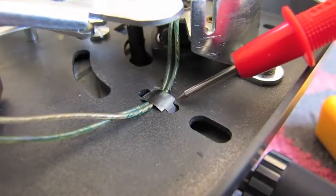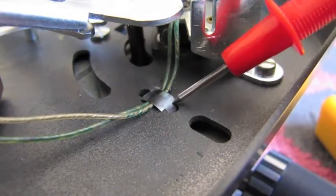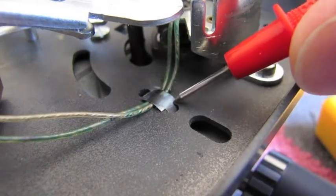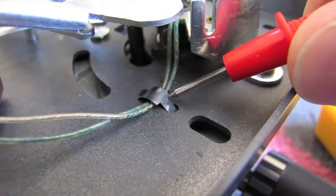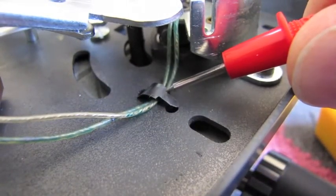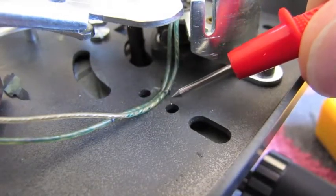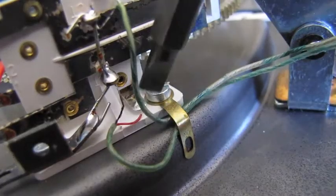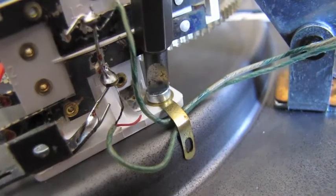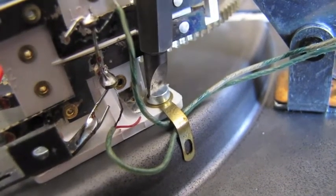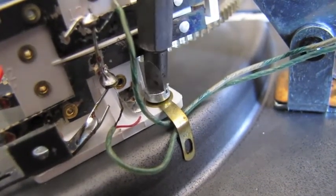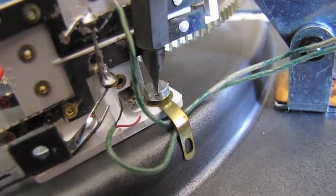Use a thin tool to remove the clip which holds the tonearm wires. Remove the screw which holds the tonearm wire bracket. Note that each of the two tonearm wires has a pair of wires inside.